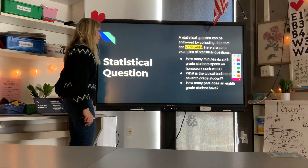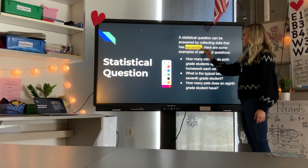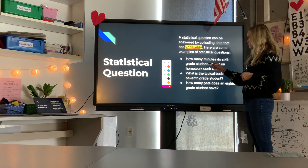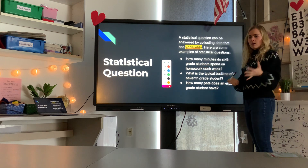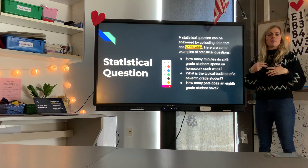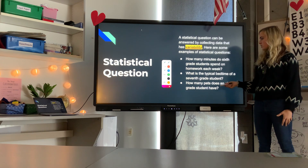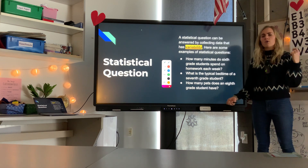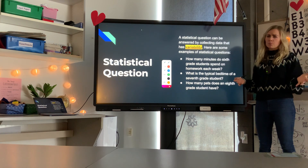Now reviewing statistical questions again: a statistical question can be answered by collecting data that has variability, meaning more than just one answer. Examples include: 'How many minutes do sixth graders spend on homework each week?' — people will give different answers. 'What is the typical bedtime of a seventh grader?' — answers range from eight to midnight. 'How many pets does an eighth grader have?' — answers will vary across students.